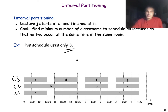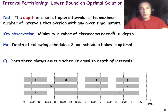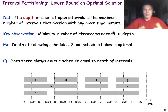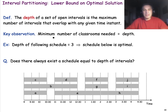Let's start with the first question: what is the minimum number of classrooms needed? Before discussing the optimal algorithm, let's define what the optimal is. Given a set of open intervals where each interval refers to a lecture, the depth of those open intervals is the maximum number of intervals that overlap at any given time instant.